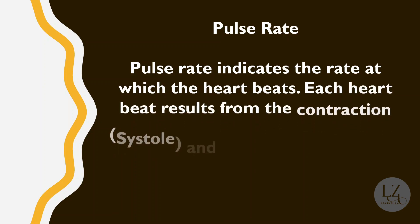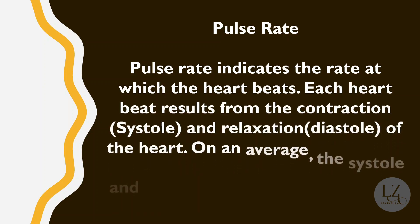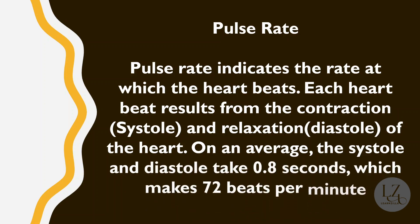Pulse rate indicates the rate at which the heart beats. Each heartbeat results from the contraction — systole — and relaxation — diastole — of the heart. On average, the systole and diastole together take 0.8 seconds, which is the cardiac cycle, making around 72 heartbeats per minute.